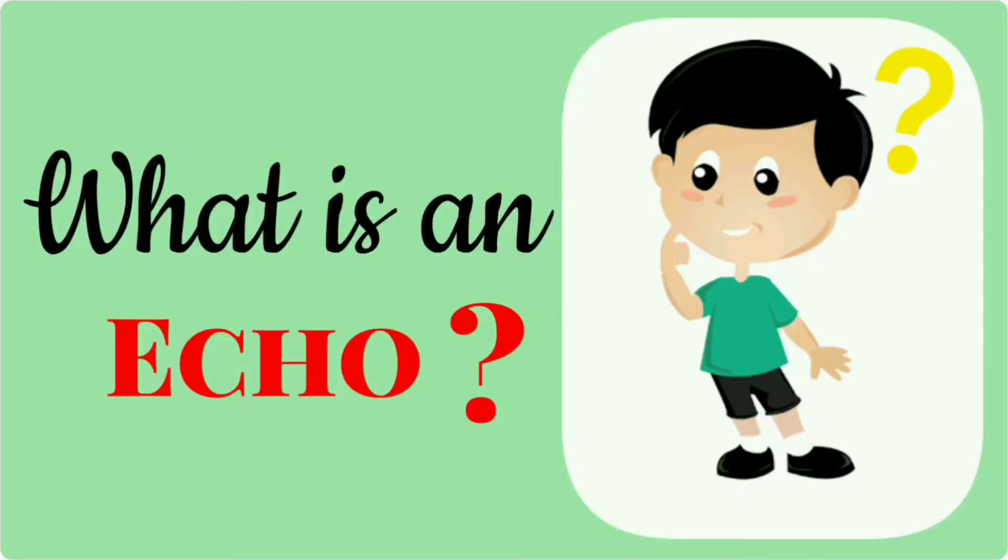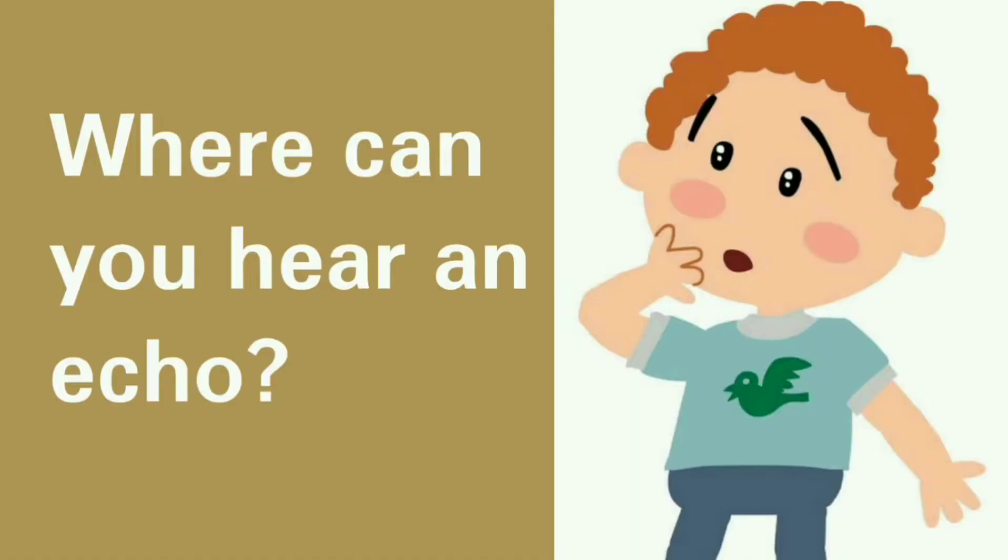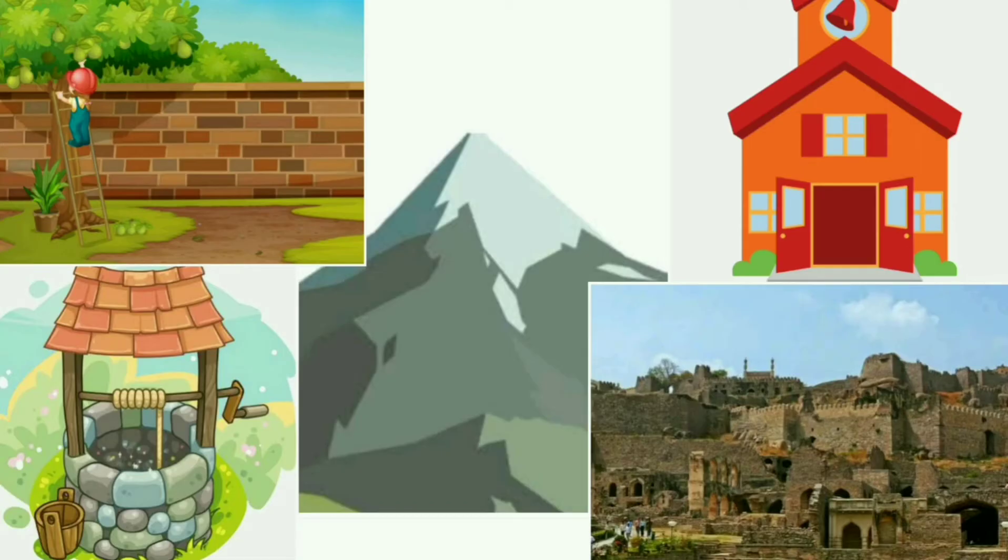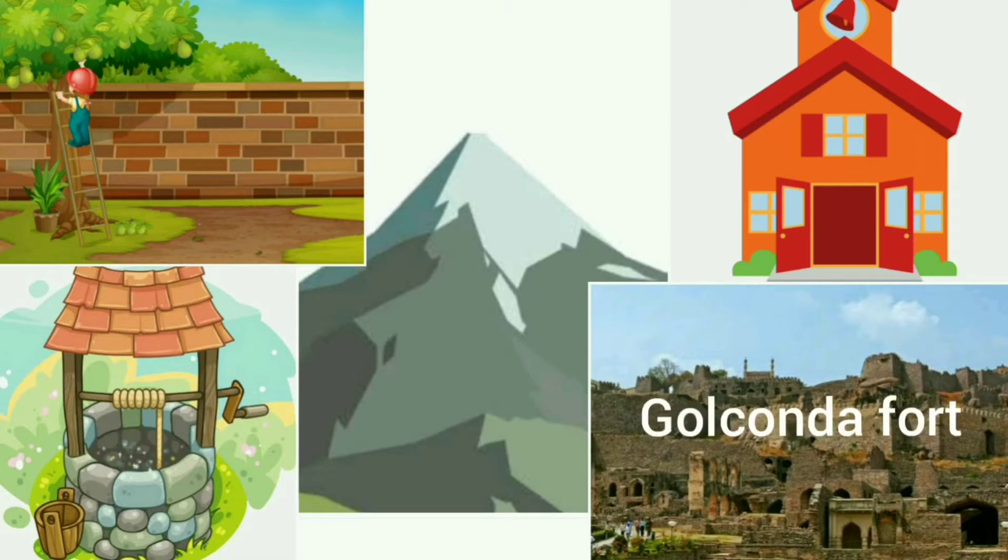Hi friends, in today's video we are going to learn about the topic echo. So what is an echo? The sound heard after reflection is known as echo. Where can you hear an echo? It can be heard in small spaces with hard walls, bells, mountains, empty rooms, or where there are lots of hard surfaces all around.